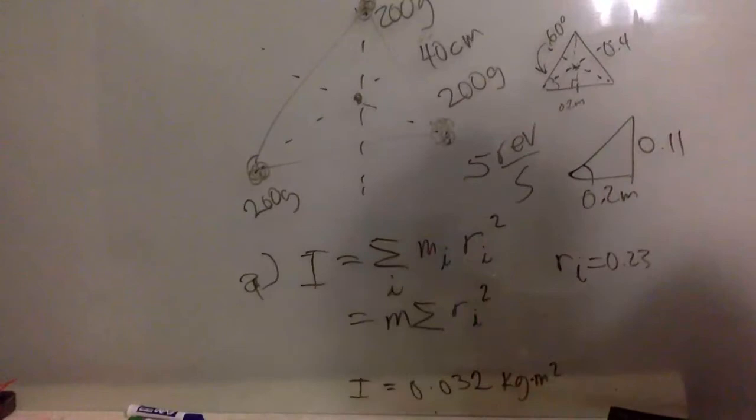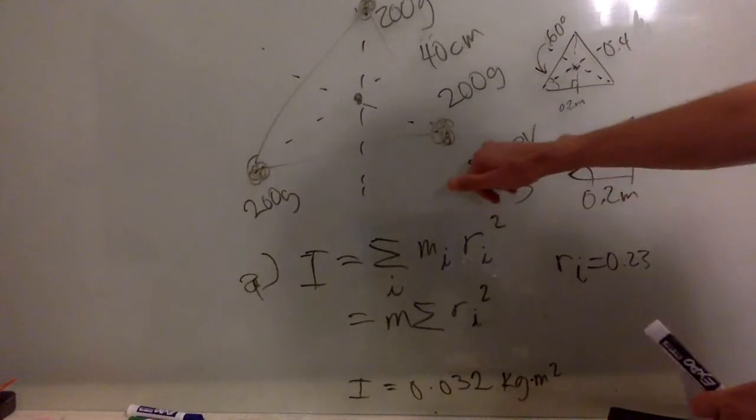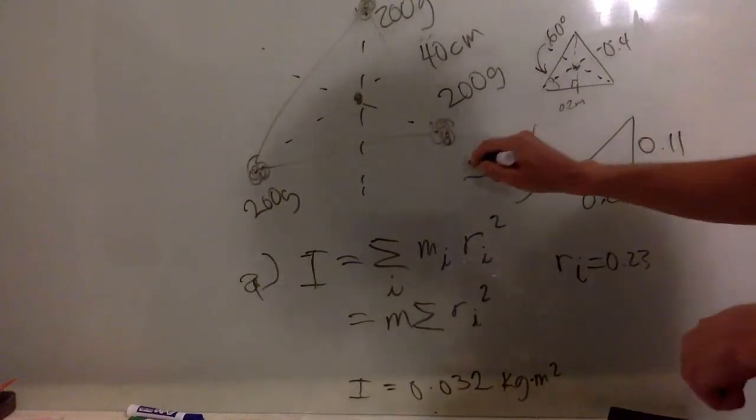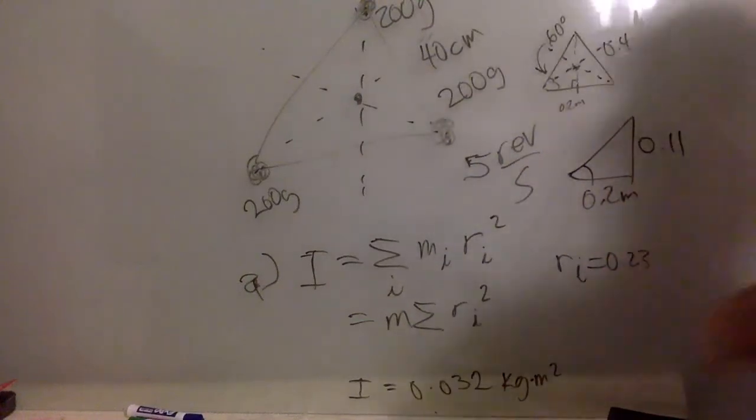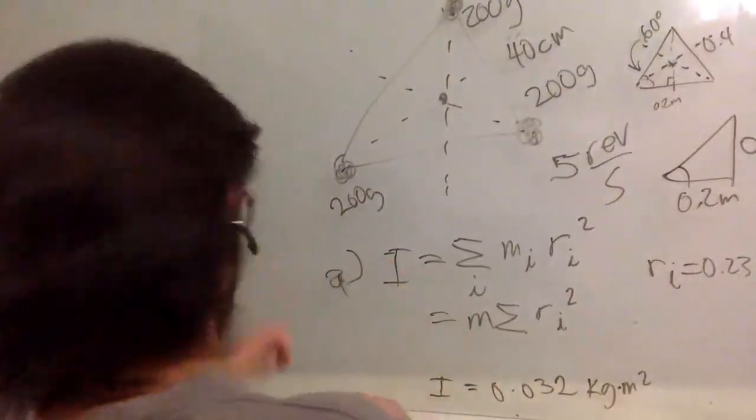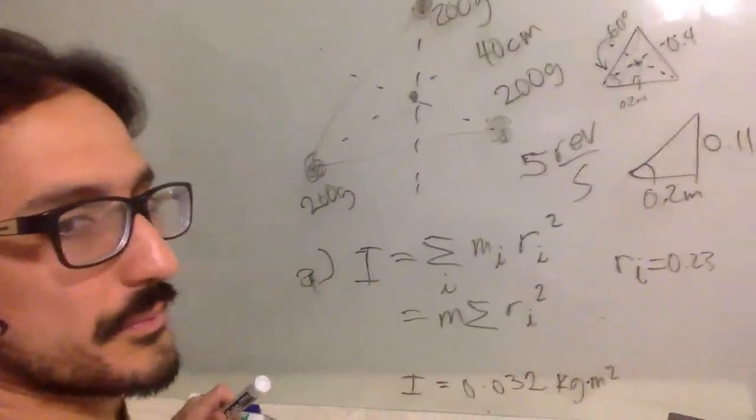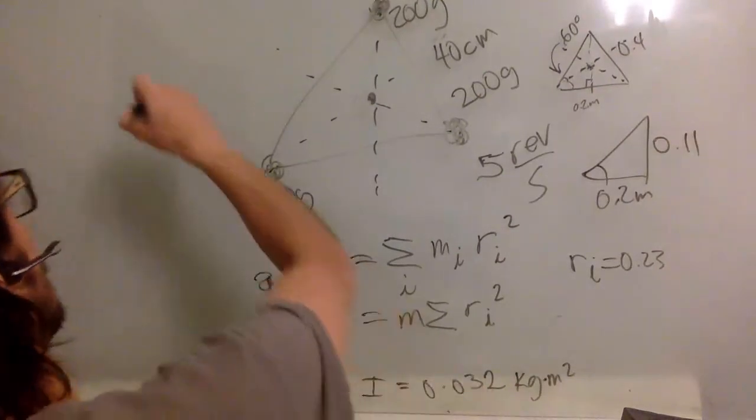So this is part A. For part B, you want the kinetic energy if it is rotating at five revolutions per second. So as I mentioned in the lecture, you know the formula for the kinetic energy, one half m v squared. I told you that you don't have to learn anything new.